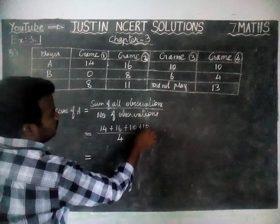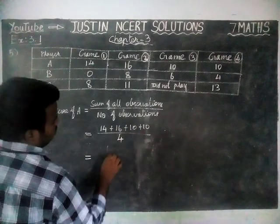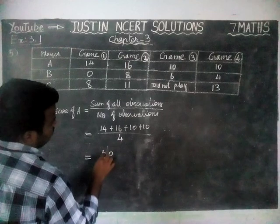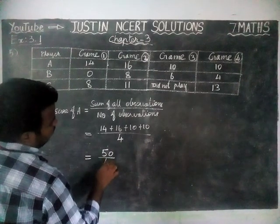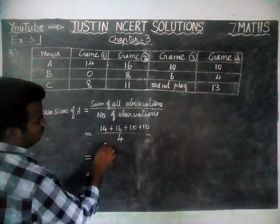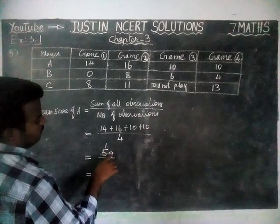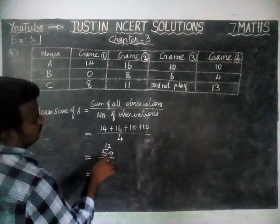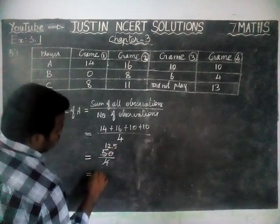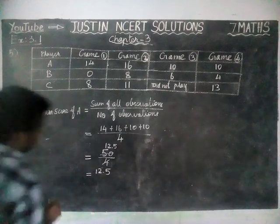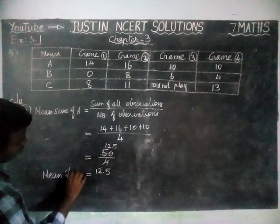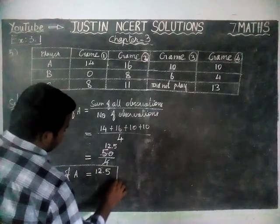Adding the values: 14 + 16 + 10 + 10 = 50. So 50 divided by 4. Working through the division: 4 goes into 50 giving 12 with remainder 2, then 20 divided by 4 is 5, giving a decimal result. The mean score of player A is equal to 12.5.